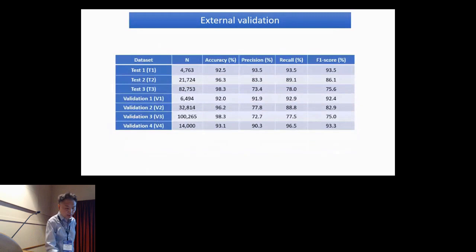This is external validation results. N is the number of papers provided. As you can see, as T1, T2, T3, with increasing numbers the number of papers also increased with more depth, it's like a more difficult challenge. I think we achieved a reasonable result.